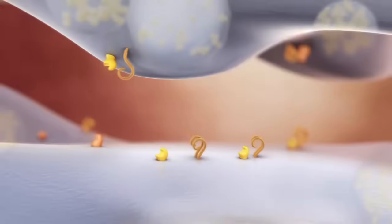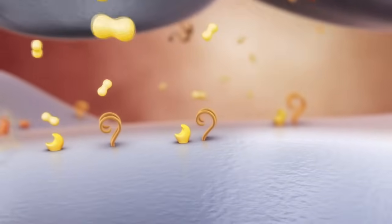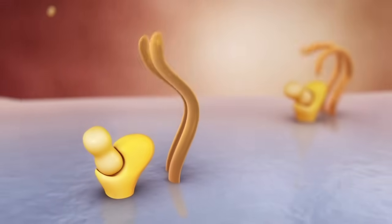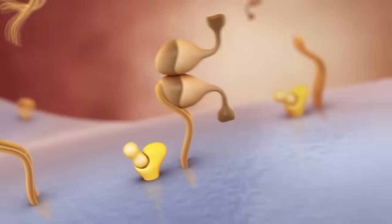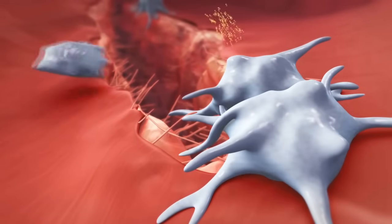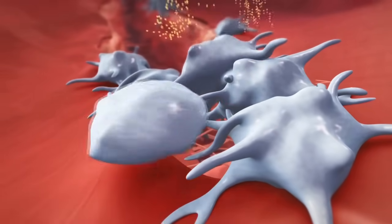The activated platelet in turn releases prothrombotic molecules such as adenosine diphosphate, ADP. By binding to its receptors, ADP induces aggregation and recruits further platelets to the site.